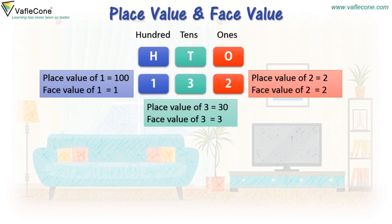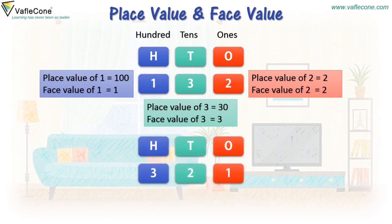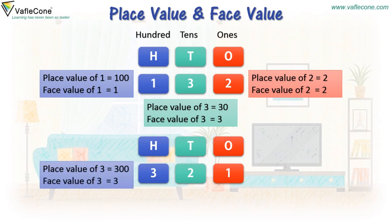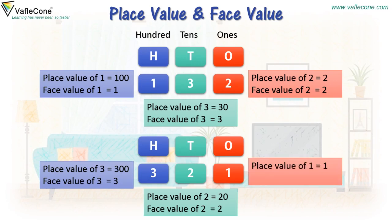Now, as we have changed the places of numbers, a new number is formed: 321. In this case, place value of 3 is equal to 300, place value of 2 is equal to 20 and face value is 2. And place value of 1 is equal to 1 and face value of 1 is equal to 1. So we see that place value changes with the place of a number, whereas face value always remains the same.